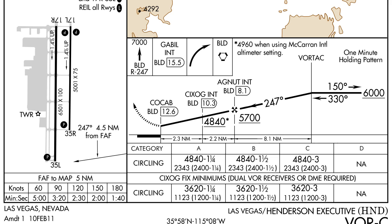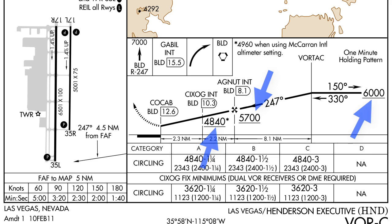Altitudes on the profile view are depicted in one of three ways. The first way is shown on this chart — you'll see a large number with a line underneath. This indicates that that is the minimum altitude that you may fly during that segment of the approach.